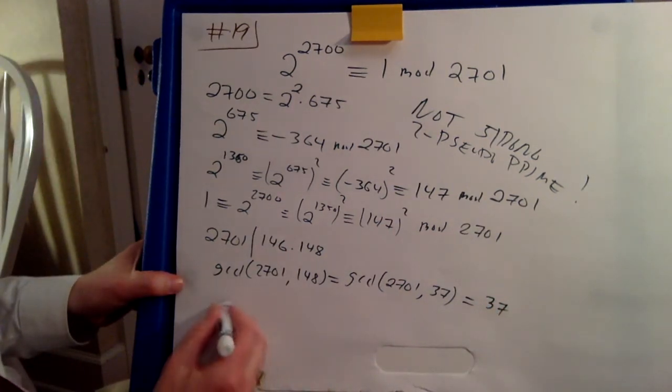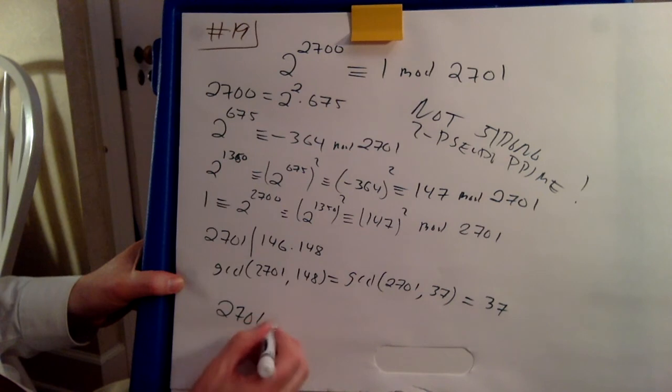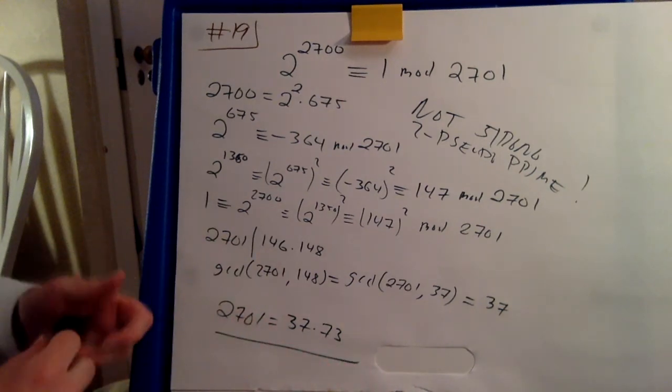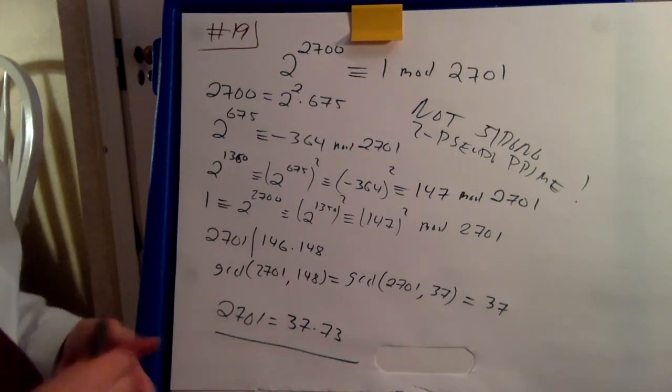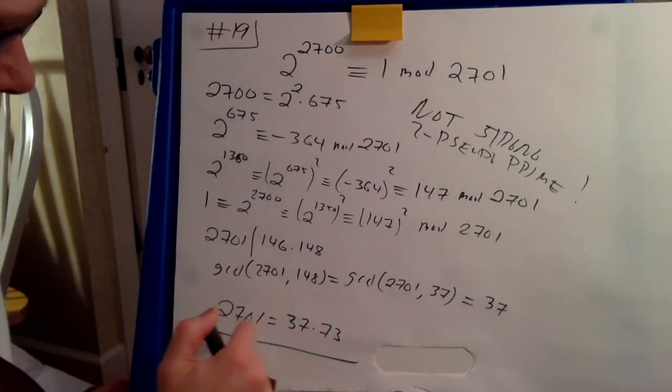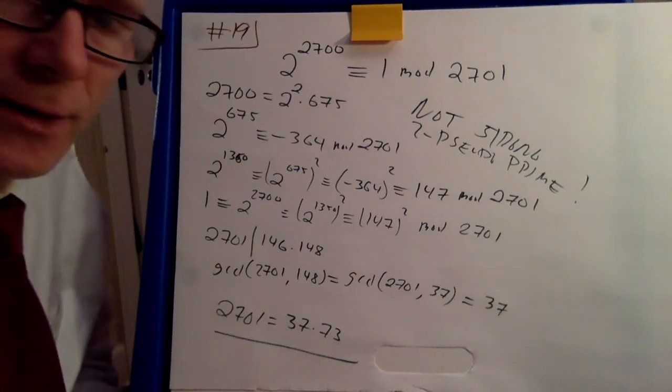And now it's easy to see. Okay, now you can do long division. And you see that 37 goes in here times 56. And there's the factorization. So by failing this strong pseudoprime test, by passing the pseudoprime test, we actually get the factorization of this number. Isn't that cute?